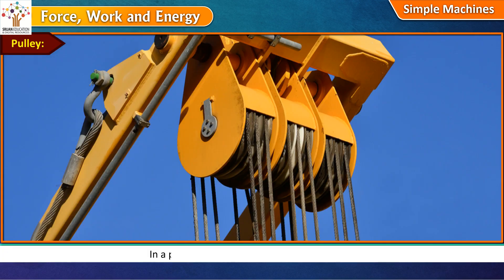Pulley. In a pulley, a cord is wrapped around a wheel. As the wheel rotates, the cord moves in either direction. For example, on a flagpole, a rope is attached to a pulley.